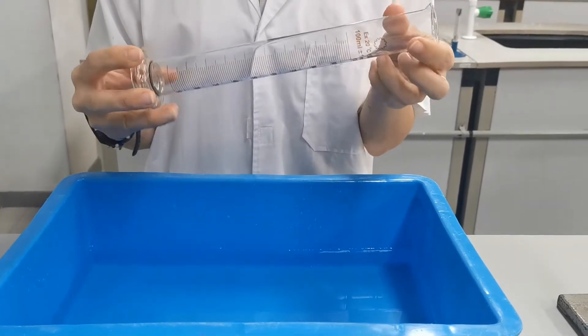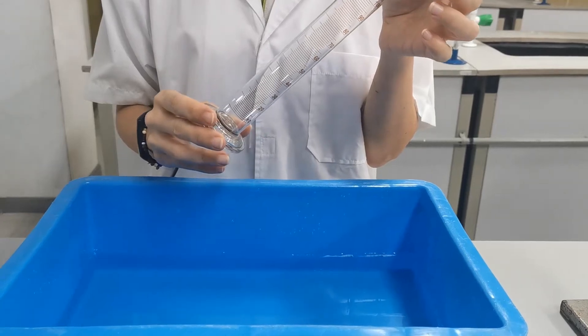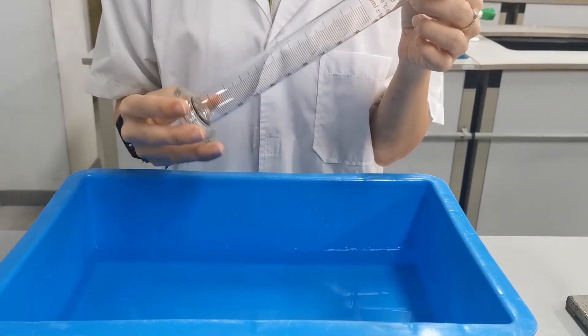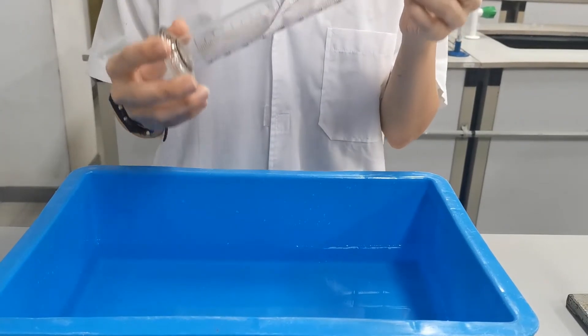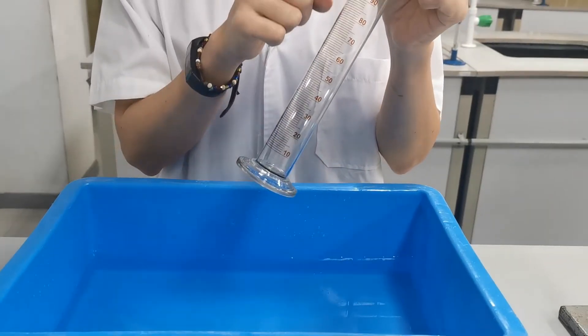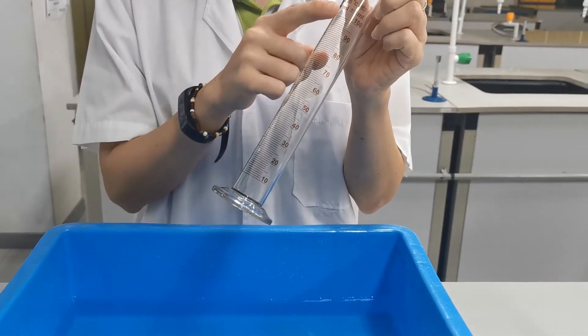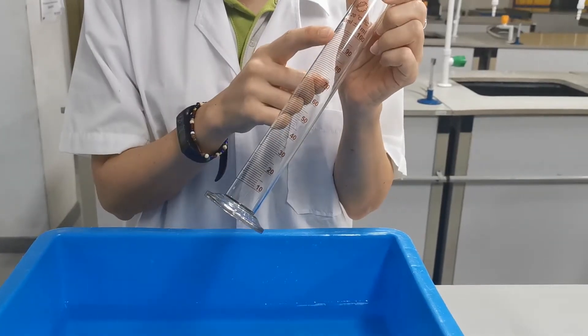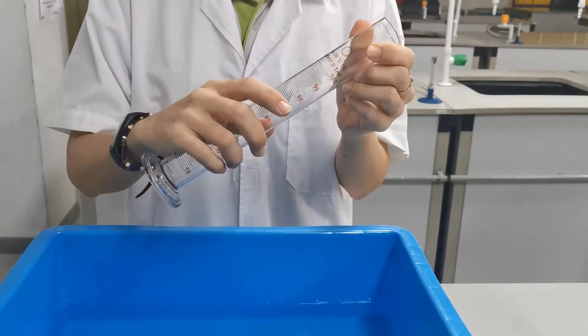We don't actually need to use a measuring cylinder; we can also use a gas tube. But with a measuring cylinder, you can record the volume of the gas that you are collecting, which is useful.